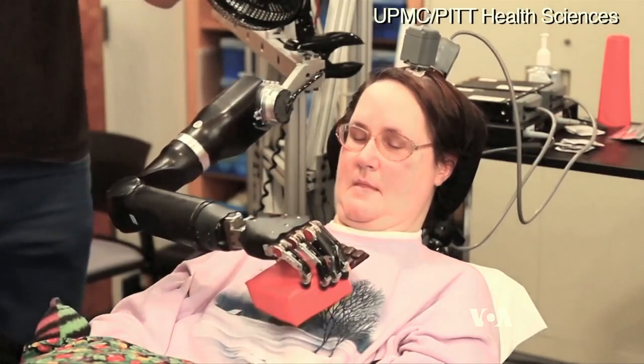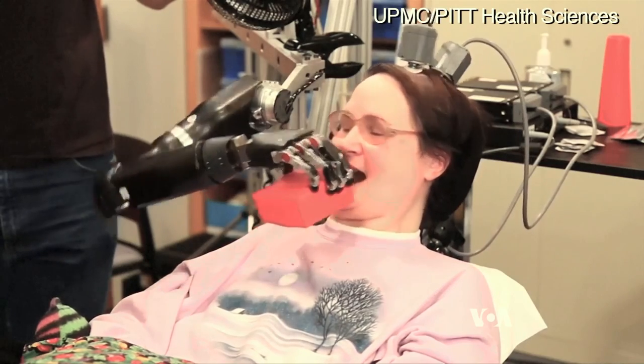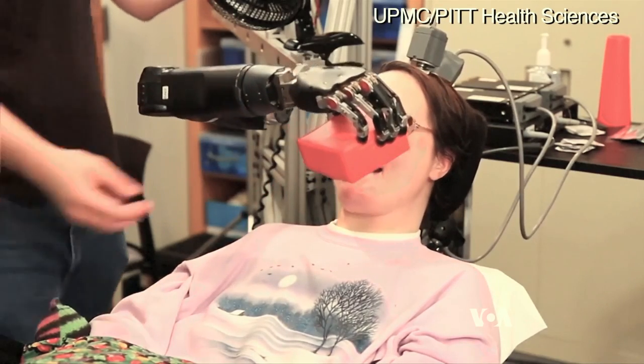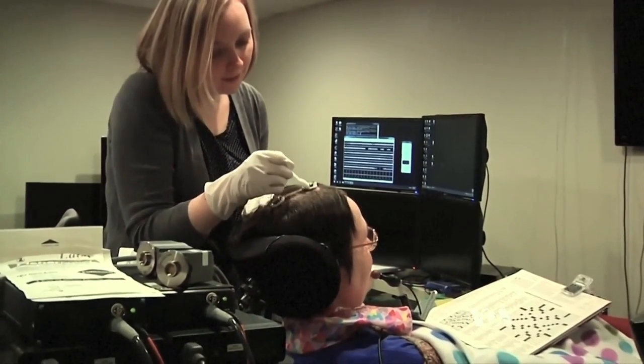In 2012, quadriplegic Jan Shurman was able to feed herself for the first time by using a robotic hand controlled by her thoughts. Doctors had wired a sensor into her brain that analyzed her neural activity.